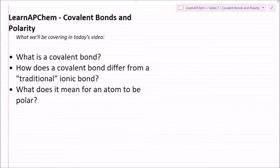Hey everybody, welcome back to the LearnAPChem series here at LearnAP. In this video we're going to talk about covalent bonds and polarity. We're going to discuss what a covalent bond is, how does a covalent bond differ from a traditional ionic bond, and what does it mean for an atom to be polar?